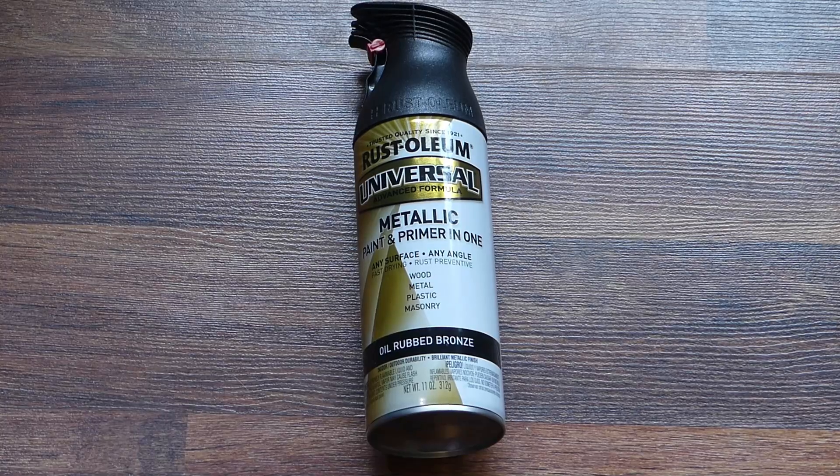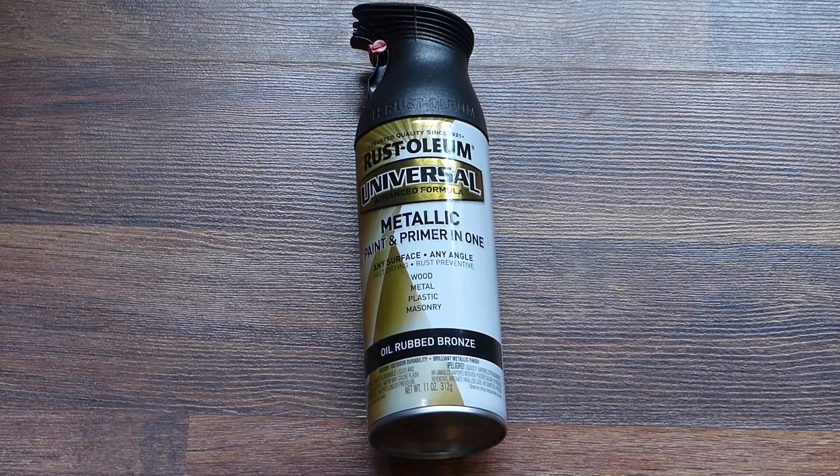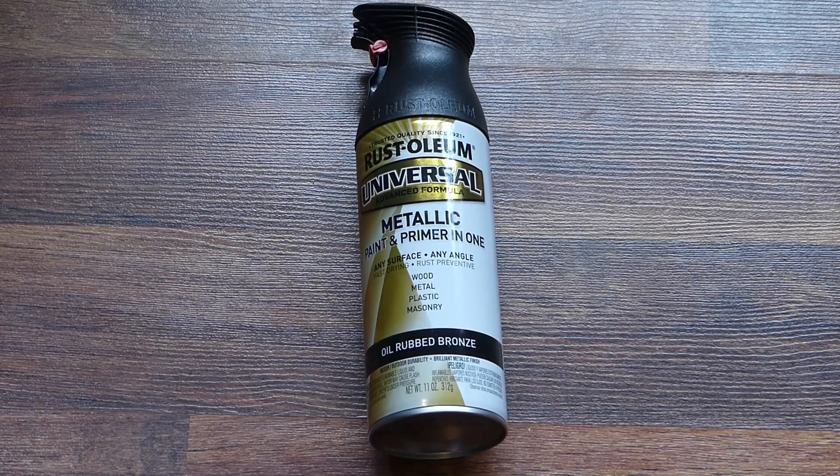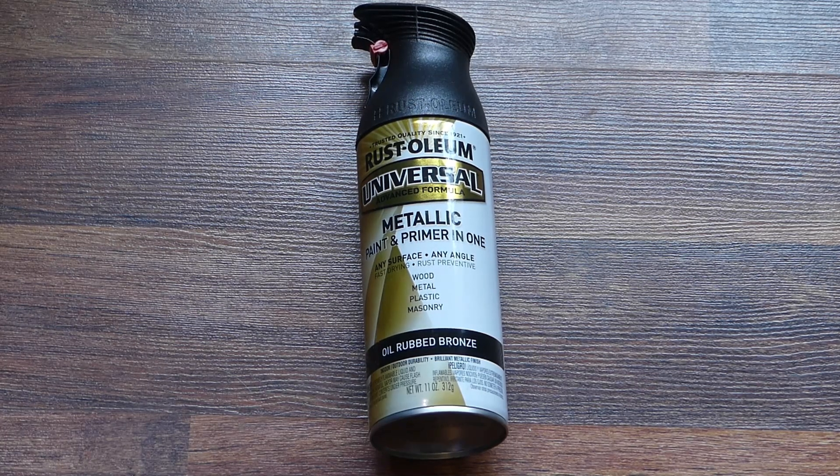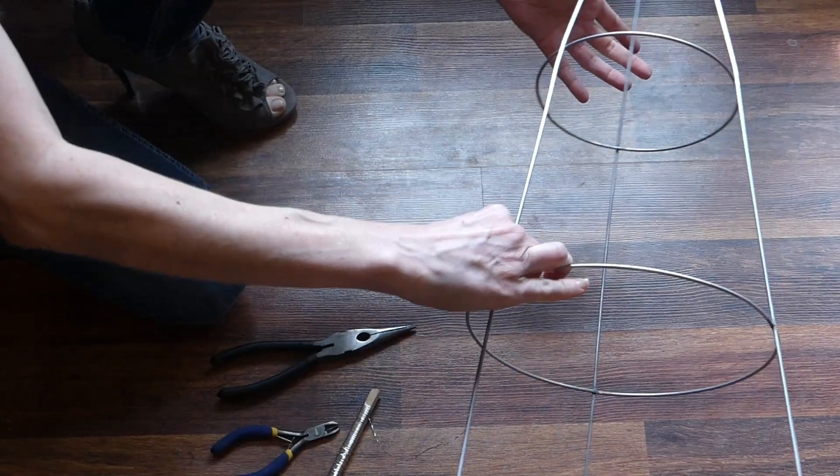If you want your finished cloche to be something other than galvanized metal, add spray paint and a drop cloth. I'm using Rust-Oleum's metallic oil rubbed bronze. First, set the tomato cage upside down and bend the anchoring legs together so they create a dome.